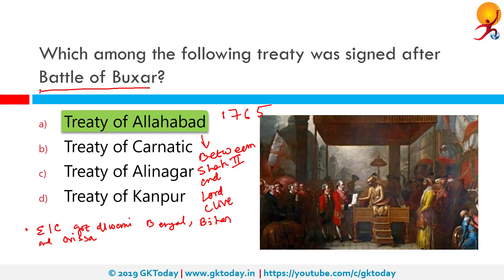The districts of Kora and Allahabad were returned to the Mughal Emperor. Awadh was returned to Shuja-ud-Daula, but Allahabad and Kora were taken from him. The Nawab of Awadh paid 53 lakh rupees in war indemnity to the British. Lord Clive effectively settled the fate of almost half of northern India.